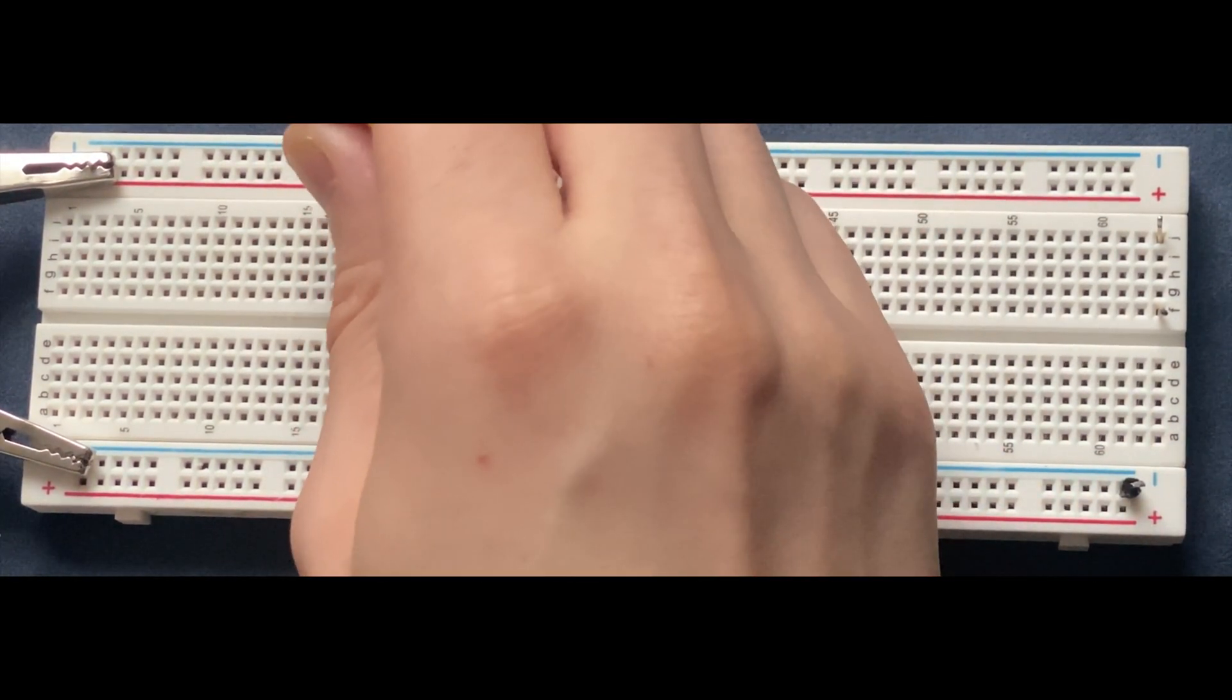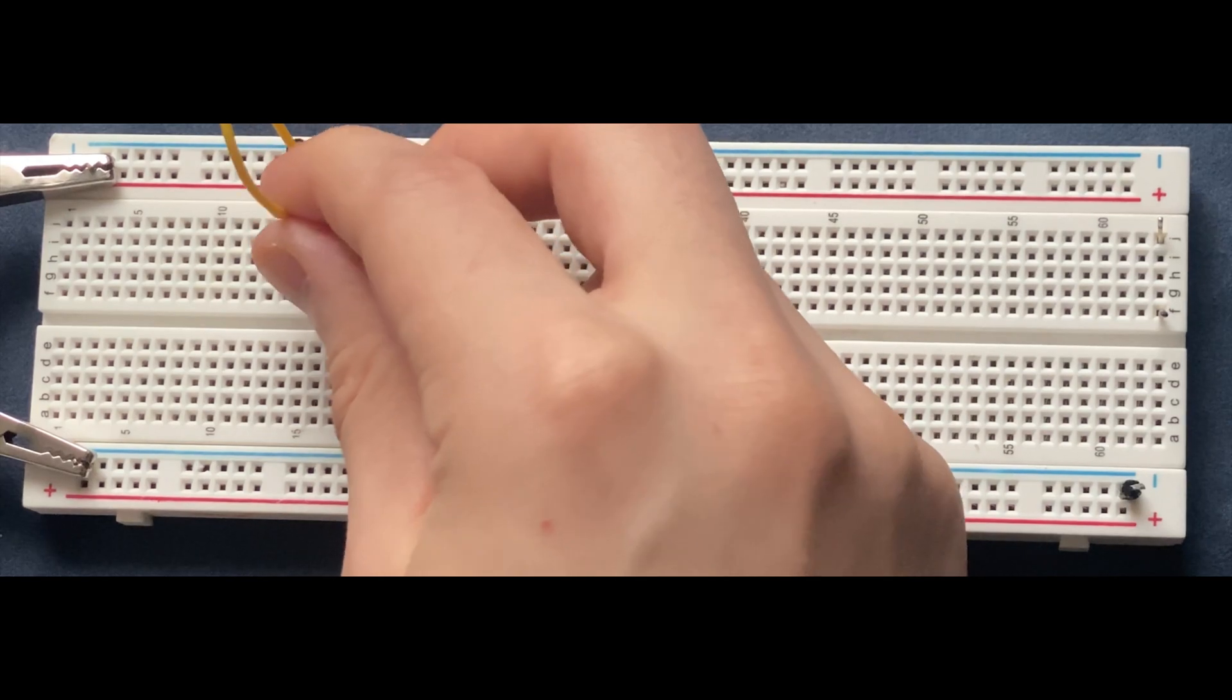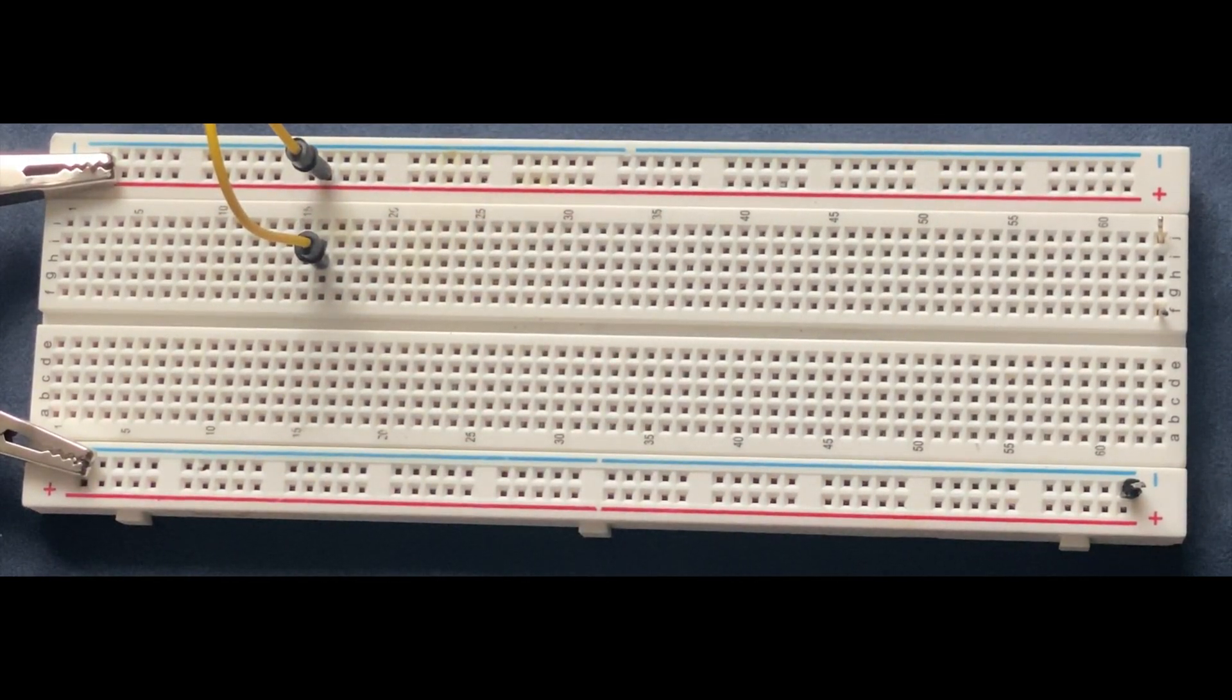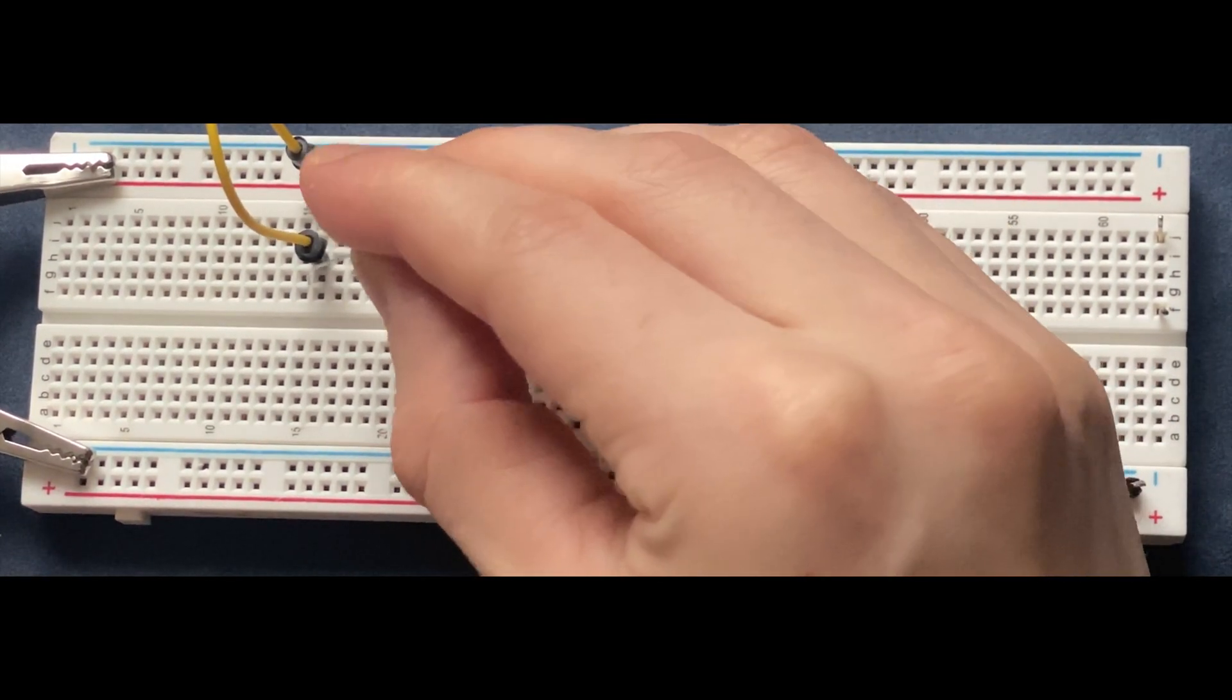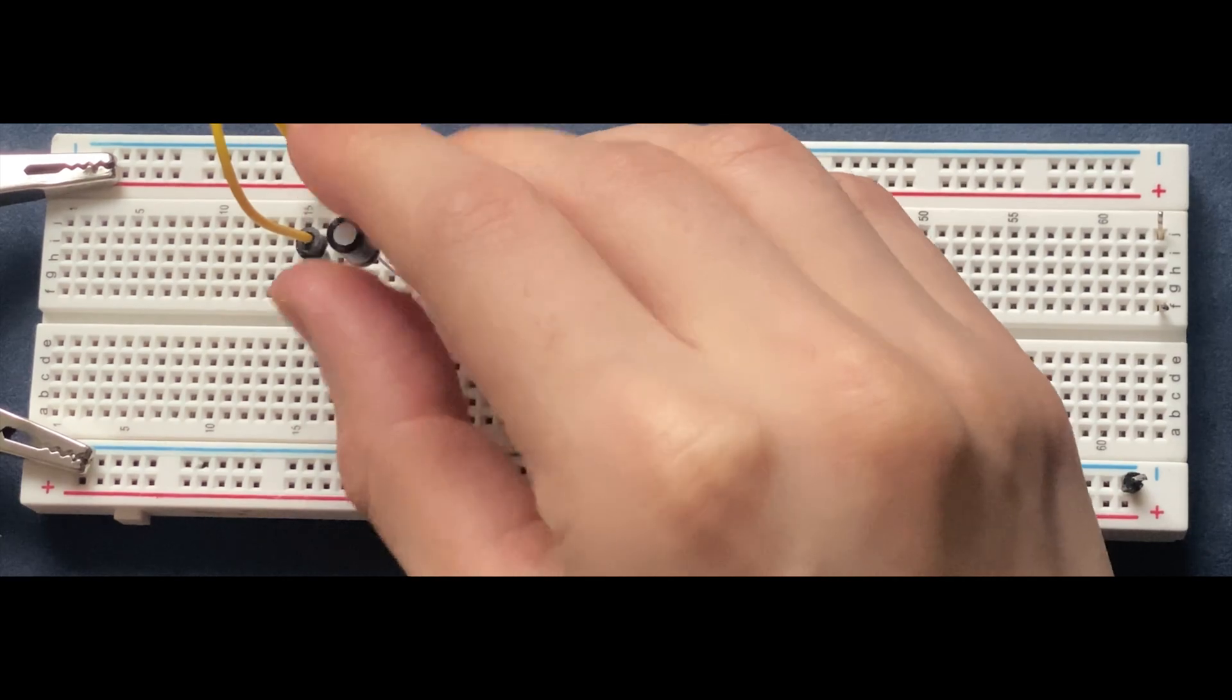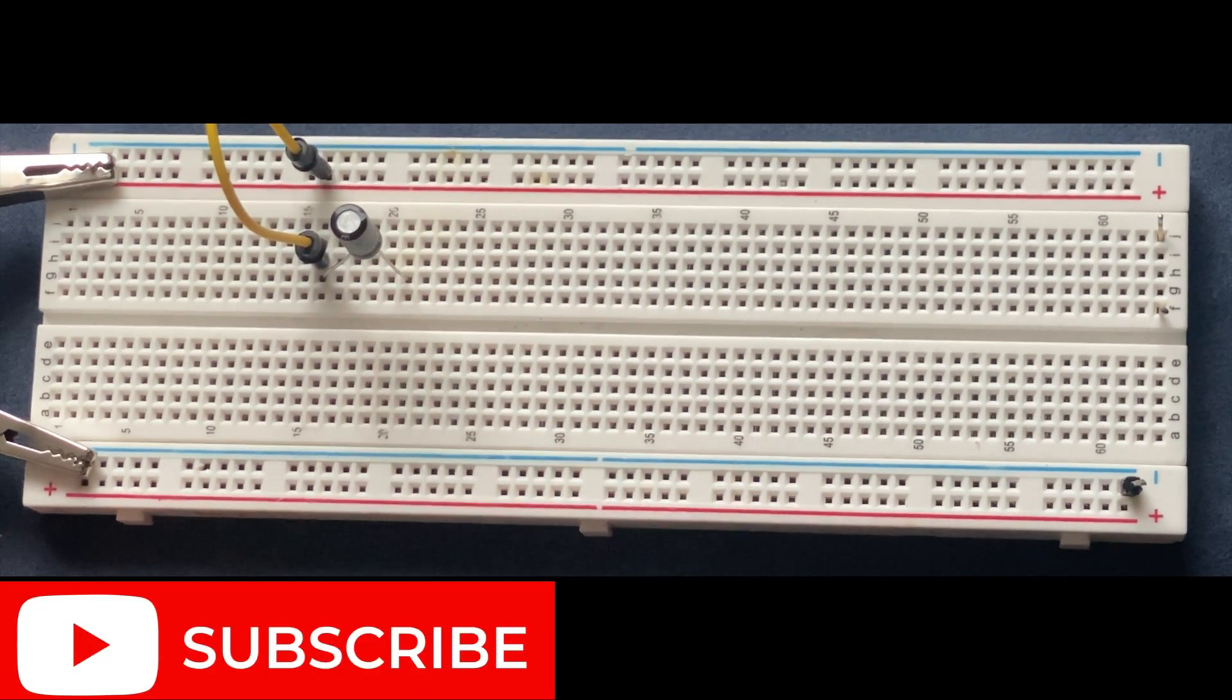I'm going to use a jumper wire from the positive rail to a random spot in the breadboard. Here is my one microfarad capacitor. The anode or positive goes to this side of the jumper wire, and the cathode goes to the random spot.